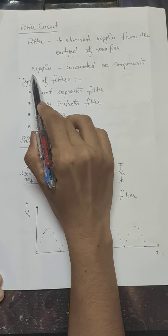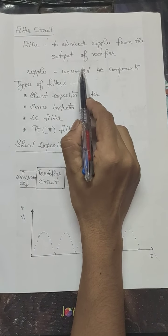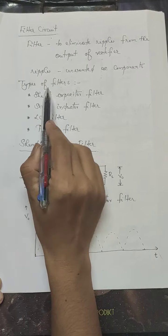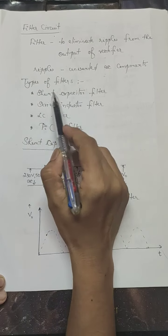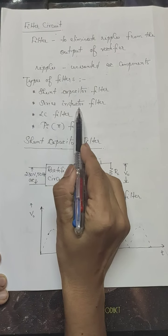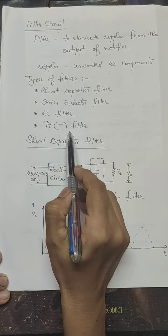As we have already said, ripple is the unwanted AC components present in the output of a rectifier. There are different types of filters available. Examples are shunt capacitor filter, series inductor filter, LC filter and pi filter.